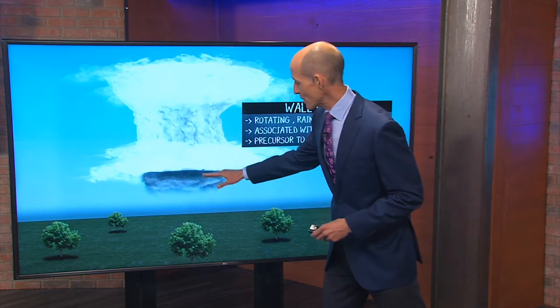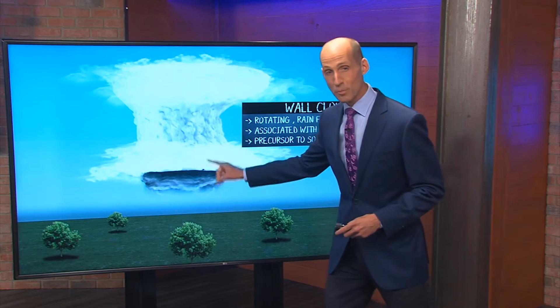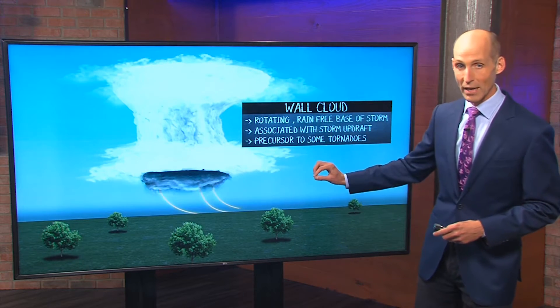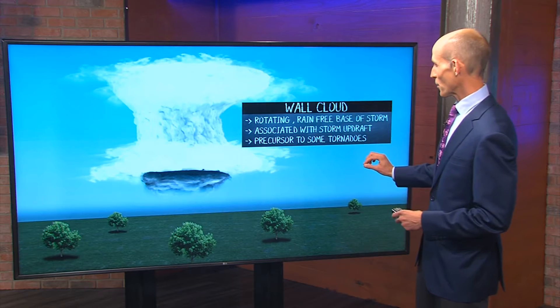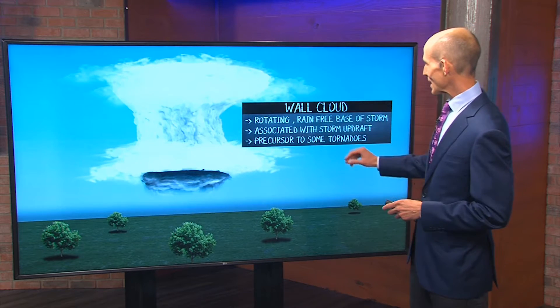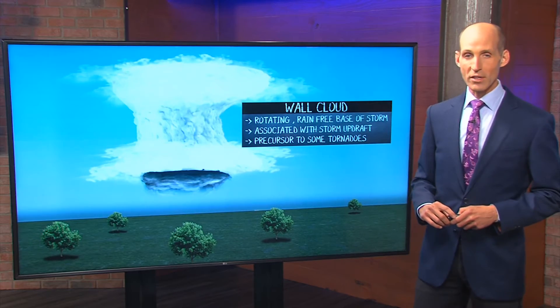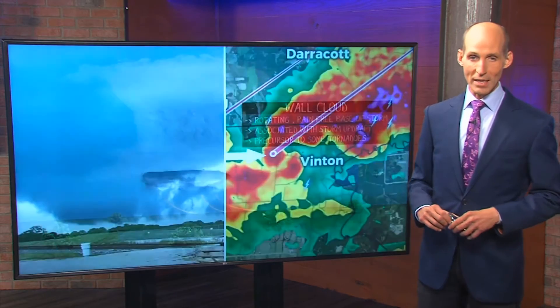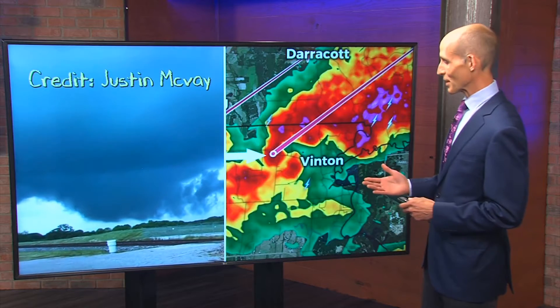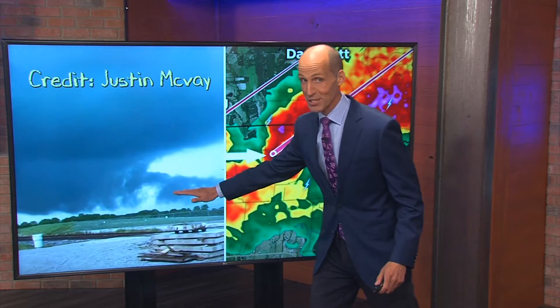Now a wall cloud is actually the rotating part of the thunderstorm at the base of the updraft. So this is the updraft cloud associated with a thunderstorm sometimes — not all the time, but sometimes. And this sometimes will lead to tornadic development if all the conditions are met. Let me show you a real-time example of one of these wall clouds. It's a very low cloud sometimes — look how close that is to the ground. This is very impressive.